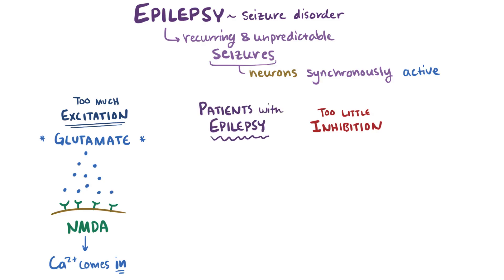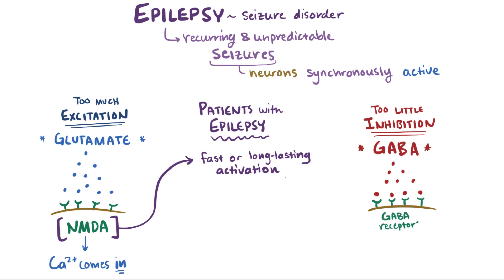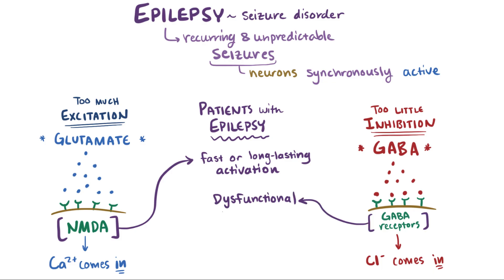Some patients with epilepsy seem to have fast or long-lasting activation of these NMDA receptors. On the flip side, the main inhibitory neurotransmitter in the brain is GABA, which binds to GABA receptors that tell the cell to inhibit the signal by opening channels that let in chloride ions — negative ions that tell the cell to inhibit signals. Some patients with epilepsy seem to have genetic mutations in which their GABA receptors are dysfunctional, and so they aren't able to inhibit signals.